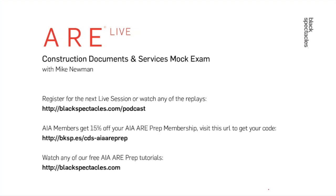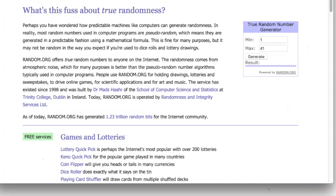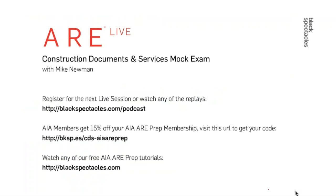A free one-month Black Spectacles membership — covering AIA ARE prep tutorials and design software tutorials including Revit, V-Ray, and Grasshopper — is being given away. Using random.org, number 34 was generated. Number 34 is Obi, who will receive an email with information about the free membership. Submit answers for the next mock exam on site planning and design to be entered in the next drawing.